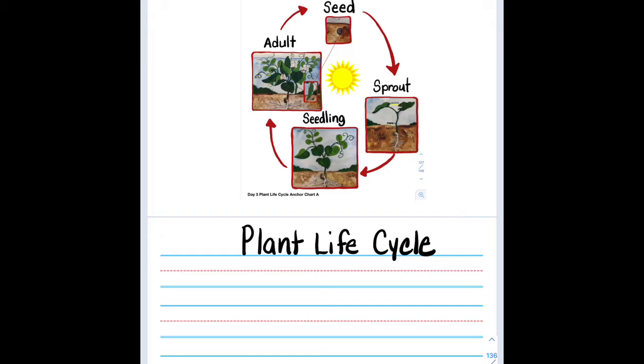Now that we have completed our plant life cycle diagram, we're going to use our diagram to write an informative writing piece. And that simply means that we are talking about something that is real and we can teach others about our topic with our writing. So we want to inform the reader about the plant life cycle.